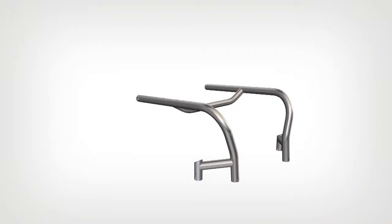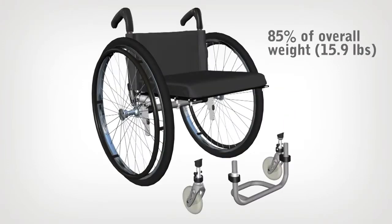But how important is the tubing to the weight of the chair? Using the Quickie GTI frame as an example of a typical rigid, ultra-lightweight chair, the frame is 15% of the overall weight, while the rest of the components are 85% of the overall weight.